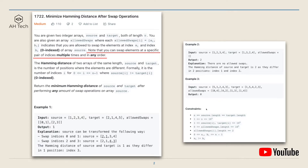As for the data constraints, the size of the source and target arrays can go up to 10 to the power of 5.